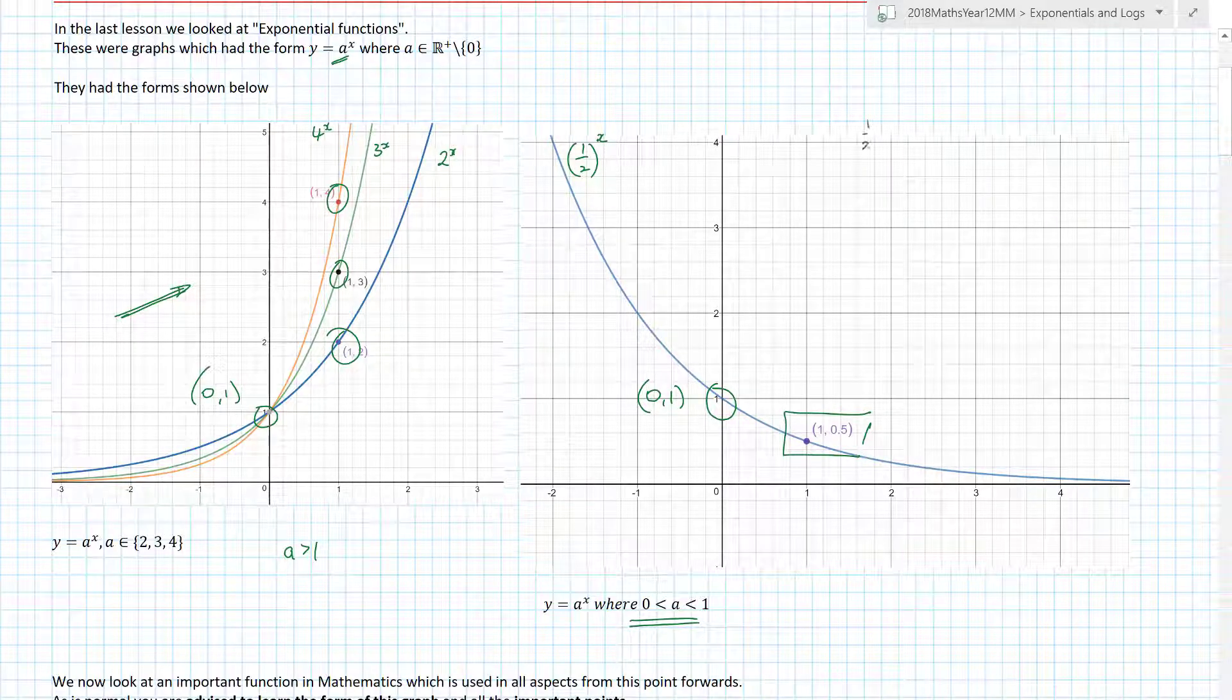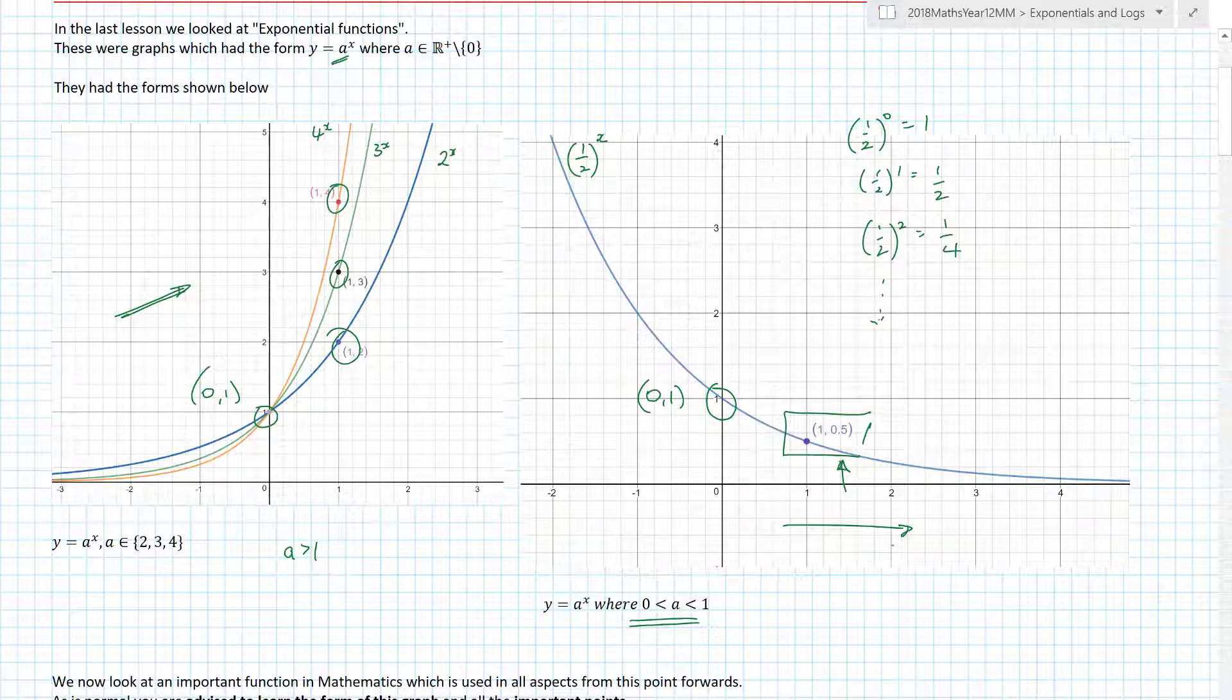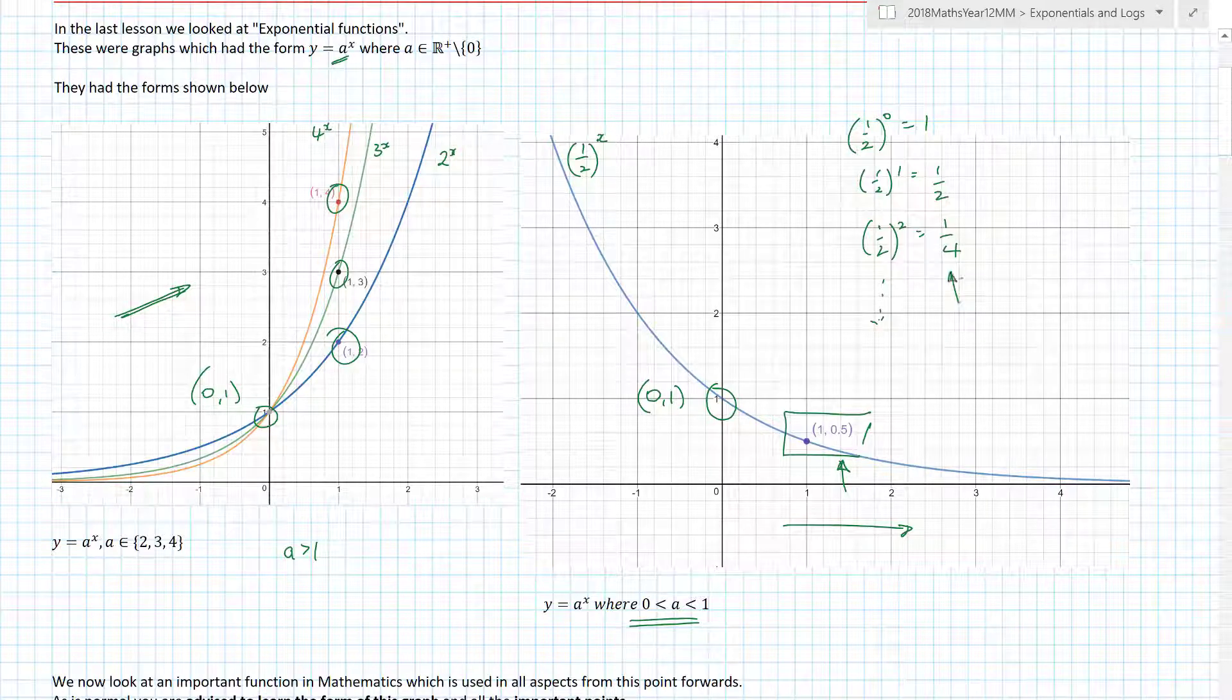When we have the value of a that goes between 0 and 1 but not including 1, then actually what we find is our graphs flip. Again it still goes through (0,1), but in this situation for example if this was (1/2)^x then that's exactly what you would end up with.